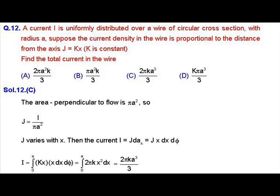So our final equation for the current will be i equals integration of kx times x dx d phi where integration has been done from 0 to a. If we simplify this equation, we can further solve this current expression as integration of 2 pi k x square dx where 2 pi is the integration of d phi which is from 0 to phi. And if we solve this question further, we will get our current as i equals 2 pi k a cube by 3, that is option c.